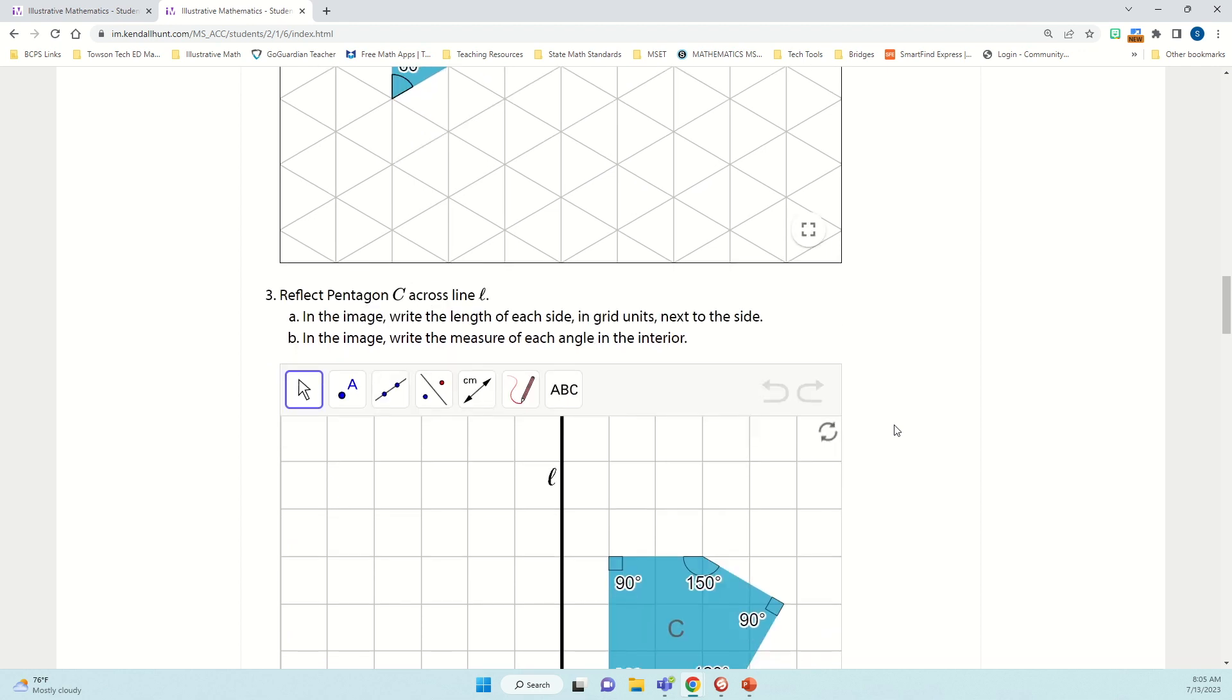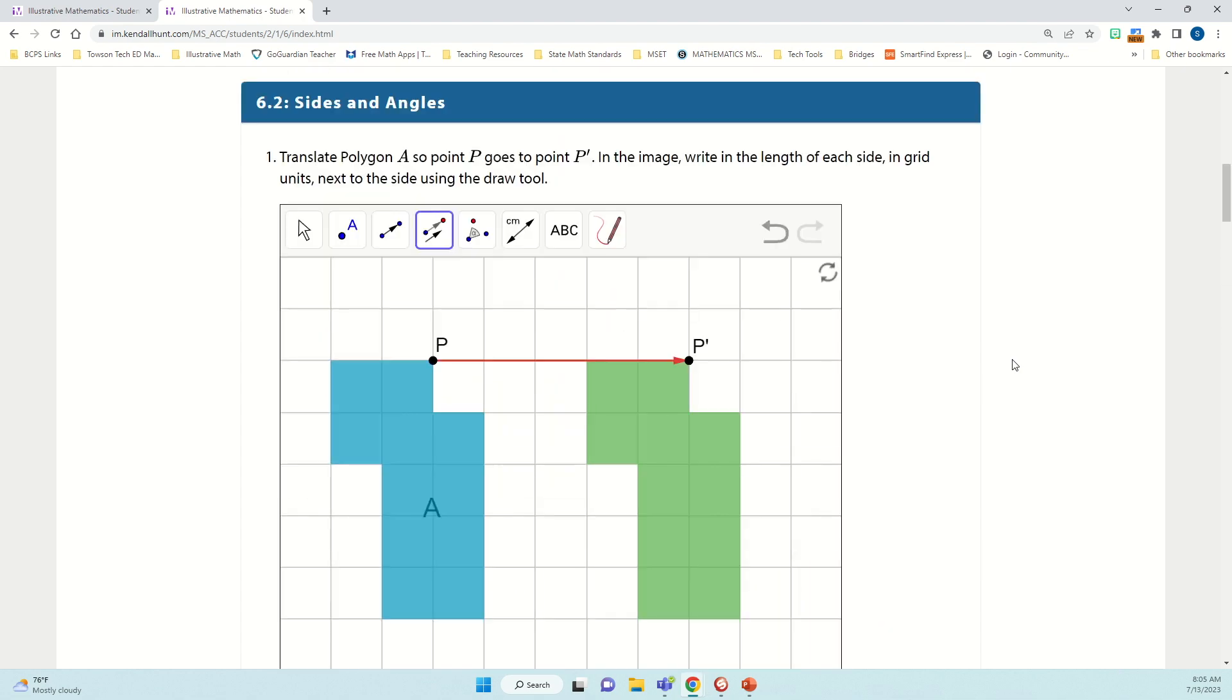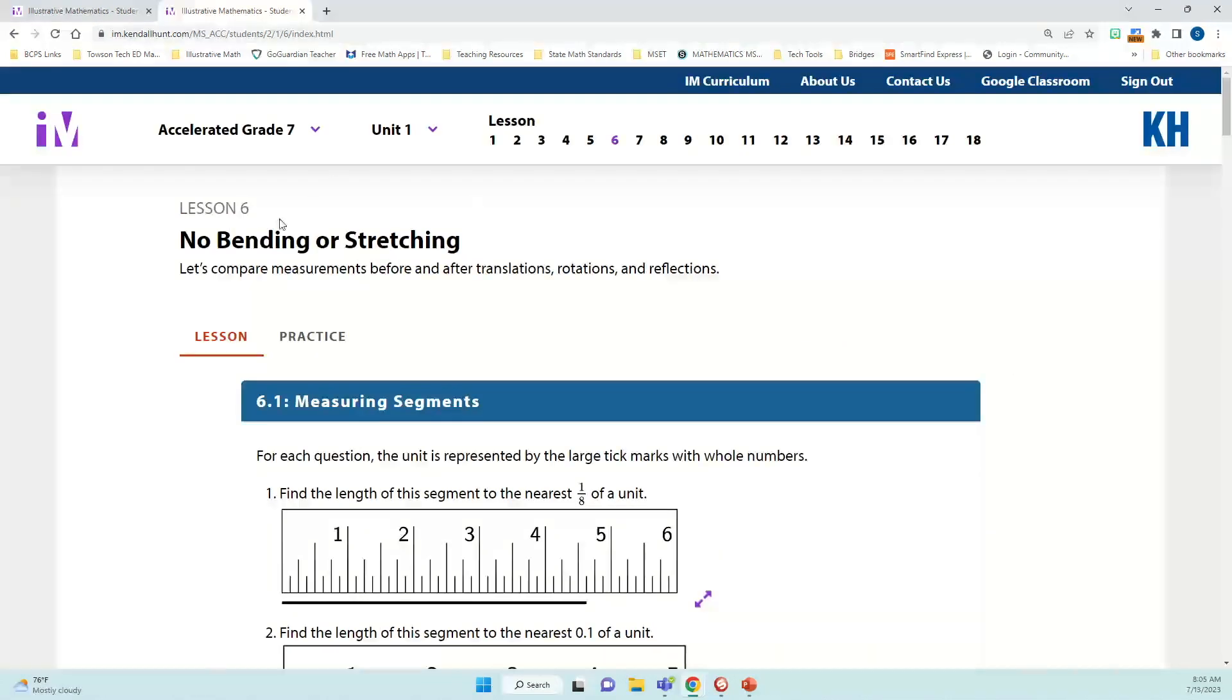Okay, last, we have an example of a reflection using this tool. And it asks us to reflect Pentagon C using the line L. So this is an imaginary line, kind of like we drew on our graph paper. And I'm going to use for this one, this reflect about a line. So I can click that button, click C, and the line, I want to reflect along this line. There you have it. So students can use these tools. Again, this one, this example, I was using Lesson 6, No Bending or Stretching.